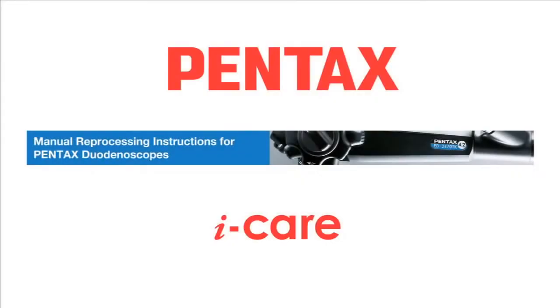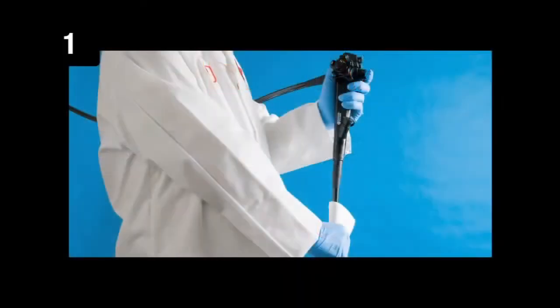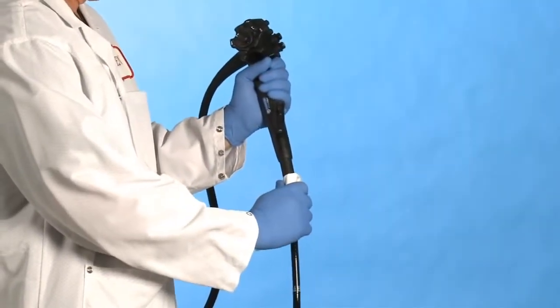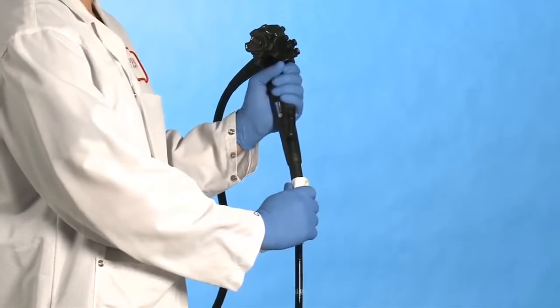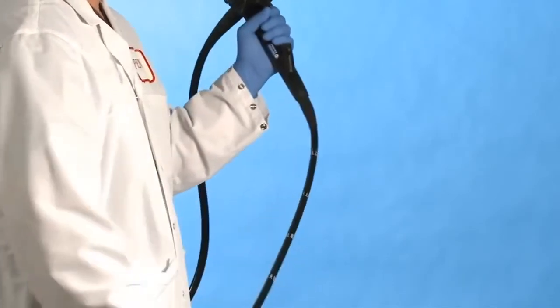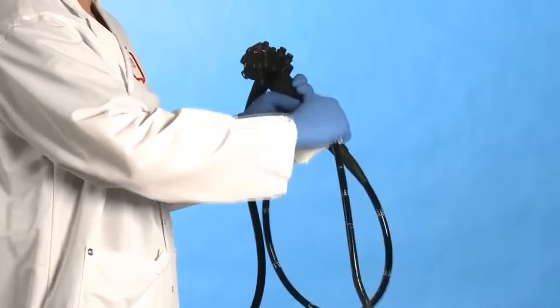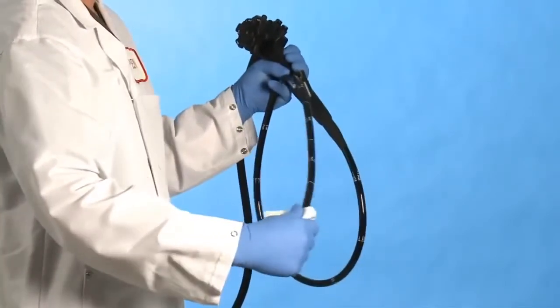Manual Reprocessing Instructions for Pentax Video Duodenoscopes. Step 1: Wipe the Insertion Tube. Immediately after the procedure, with the endoscope still connected to the processor, wipe the insertion tube with a lint-free cloth saturated with enzymatic solution that has been diluted in accordance with the manufacturer's instructions.